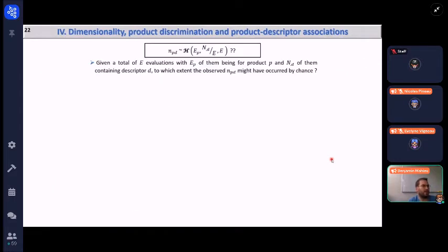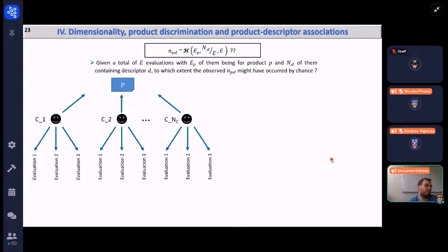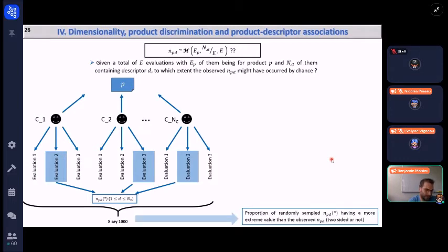Finally, the last question we want to answer is given a total of E evaluations with NPE of them coming from product P and ND of them containing the descriptor D, to which extent the number of citations for product P and descriptor D we observe might have occurred by chance. So this is also based on the Monte Carlo approach. For each of the consumers, an evaluation is randomly selected among each of them, then the corresponding NPD are computed and the procedure repeated a large number of times. Then the proportion of randomly sampled NPD having a more extreme value than the observed one are used as a p-value. You can do that two-sided or not depending on the null hypothesis you have. Then replacing P by P-prime, another product, repeating the procedure, and then for each product it enables investigating if the descriptor characterizes or not the product.